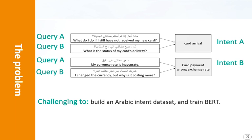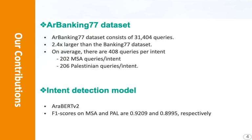The challenge is to build such a dataset and also to train a model for intent classification. Our contributions are the Banking77 dataset, which contains 31,000 queries classified into 77 intents, and covers Modern Standard Arabic and Palestinian dialect, and also a fine-tuned AraBERT V2, which is a pre-trained transformer model for Arabic. Our model achieved an F1 score of 92% on MSA and about 90% on Palestinian dialect.